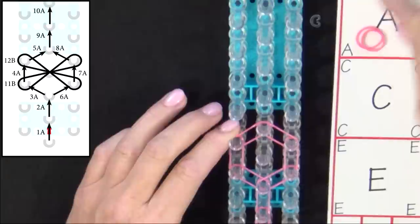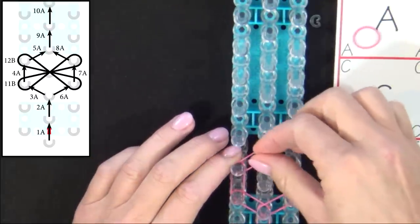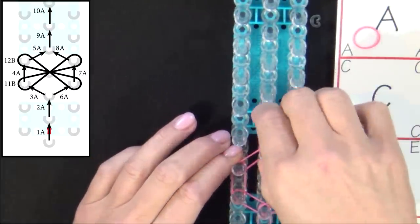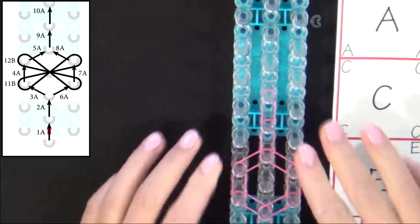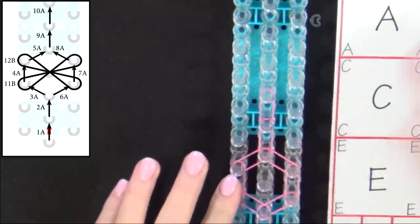We continue forward with 9A. And then 10A. Now we'll place the Butterfly Blossom.